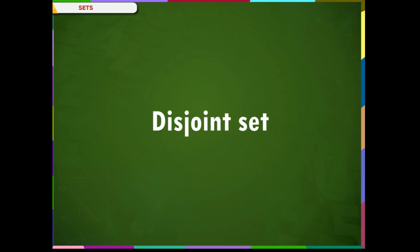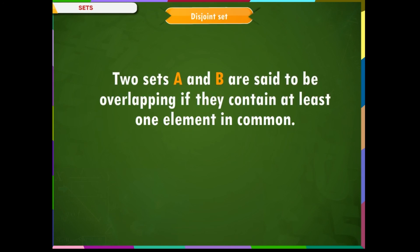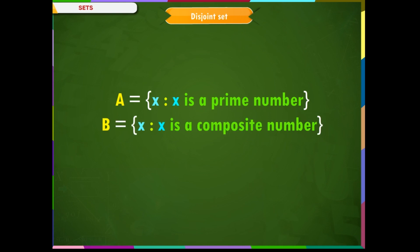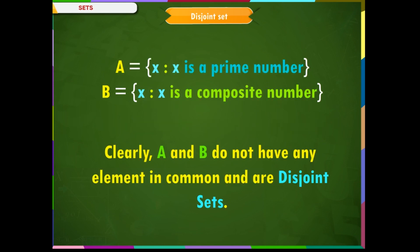Disjoint set. Two sets A and B are said to be disjoint if they do not have any element in common. For example, A = {x such that x is a prime number} and B = {x such that x is a composite number}. Clearly, A and B do not have any element in common and are disjoint sets.